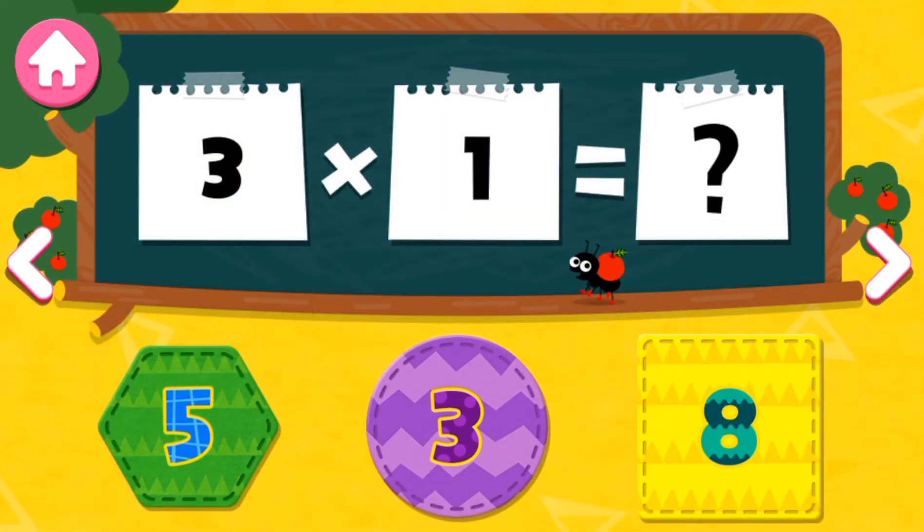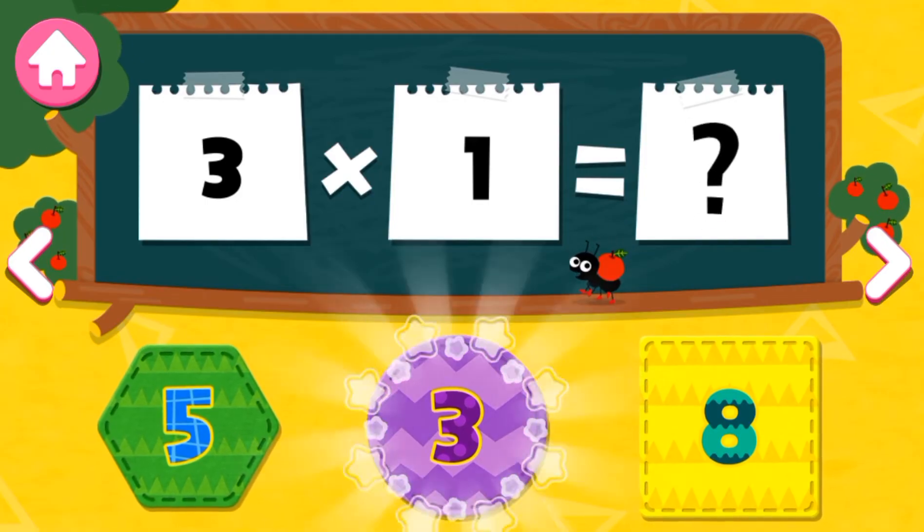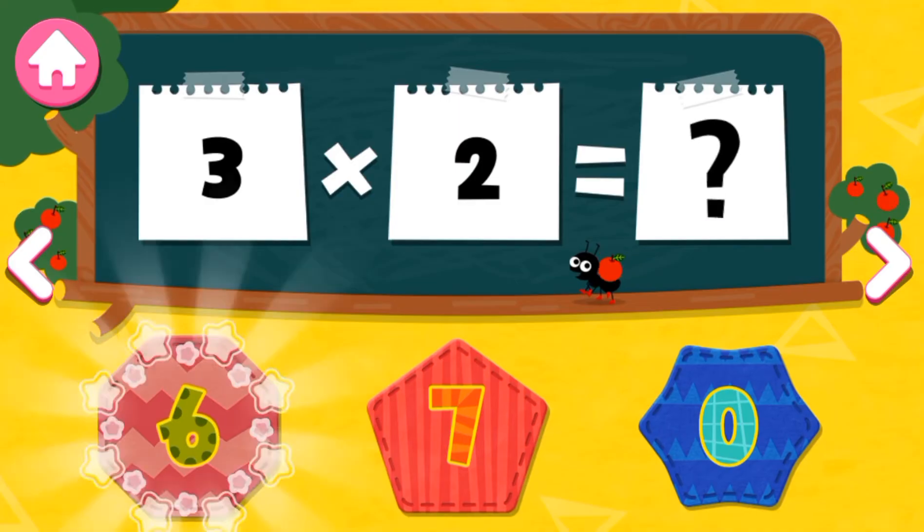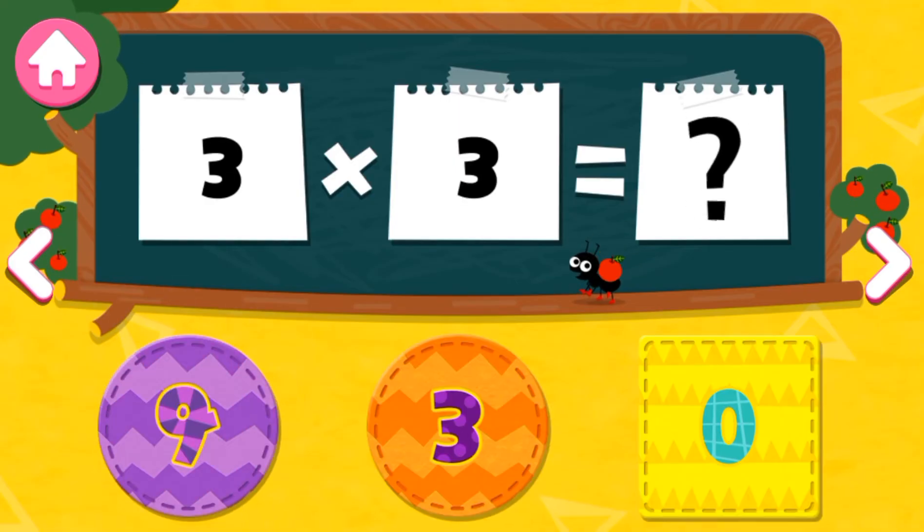3 times 1 is... 3. Yay! 3 times 2 is... 6. Yay! 3 times 3 is... 6. Yay!